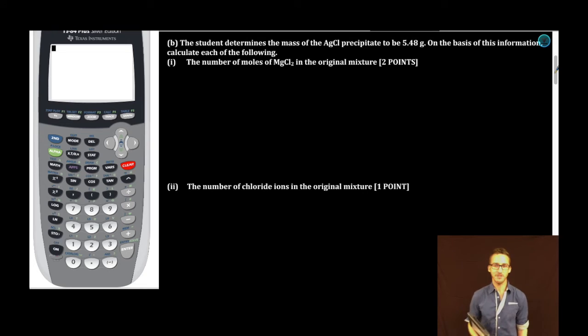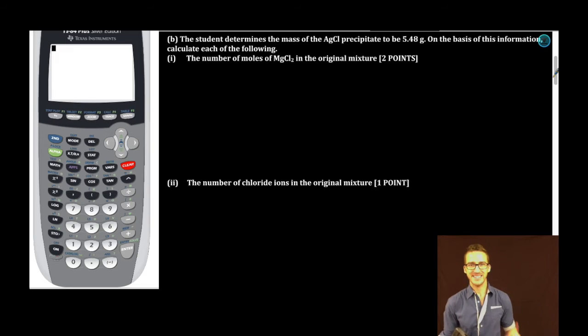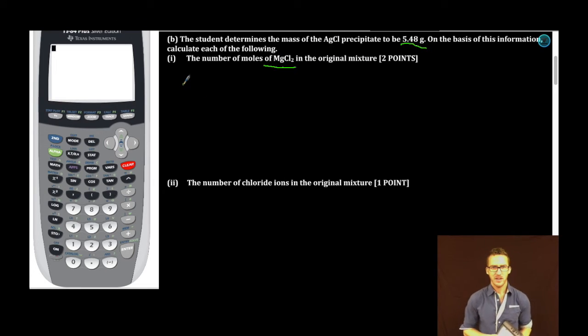Part B. The student determines the mass of the AgCl precipitate to be 5.48 grams. So basically, the student already did all these beautiful steps that we've outlined here, and they collected 5.48 grams of silver chloride. On the basis of this information, calculate the following subpart I: The number of moles of magnesium chloride in the original mixture. Okay, so we're looking for moles of MgCl2, and all we're given is the mass of AgCl. We've got 5.48 grams of AgCl. Now think about it. Where did that chloride in the AgCl come from? It came from the magnesium chloride in the original mixture.